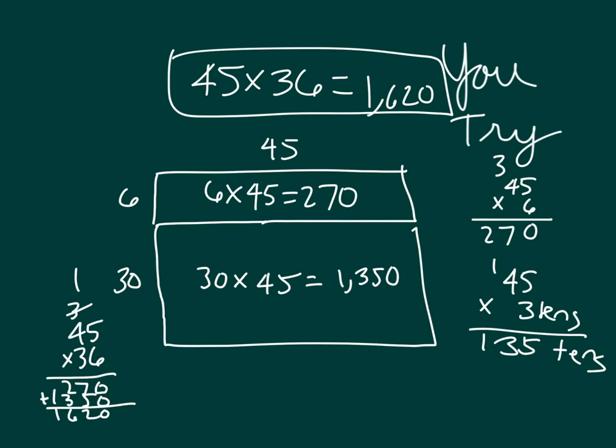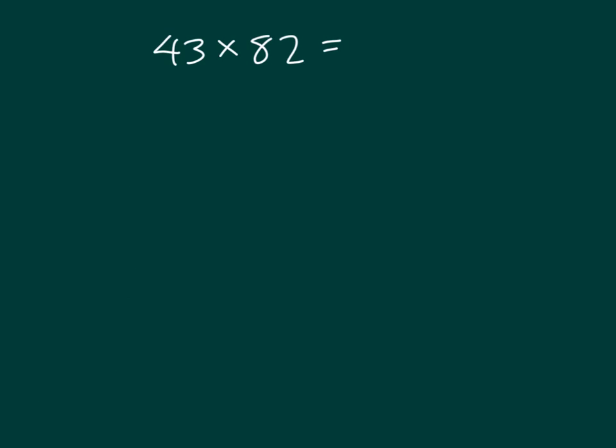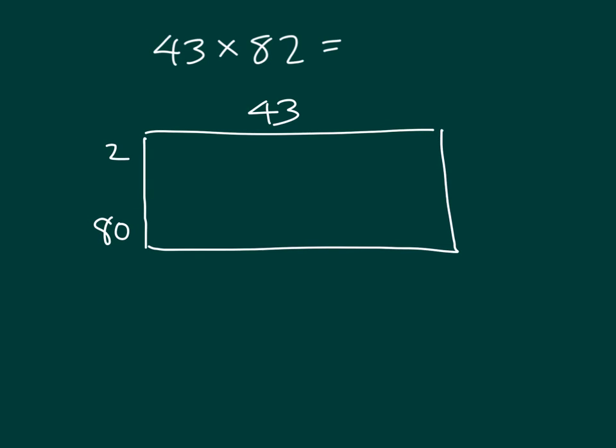So that's how the two partial products connect to that standard algorithm. Let me show you one more example. So we'll go ahead and record 43 first. And we'll break apart 82 into 2, and the 8 tens. So we first multiply 2 times 43, where we get 86.